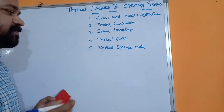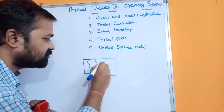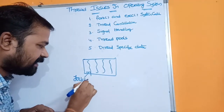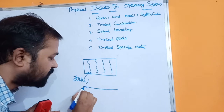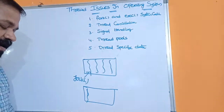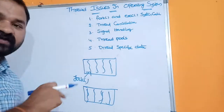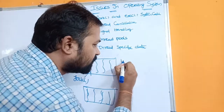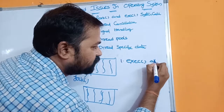Now let's see what will happen when threads call fork and exec system calls. Assume we have a process that contains 4 threads. If thread1 calls fork system call, how many threads will be created in the new process? Will the new process be created with only one thread as a duplicate copy of that thread, or with 4 threads as duplicate copies of the parent process? There are two options depending on whether exec is used after fork.